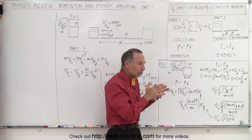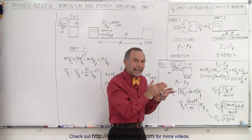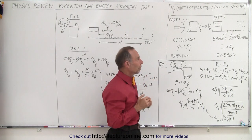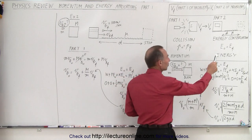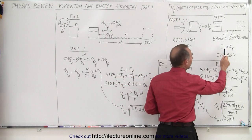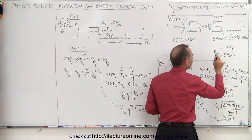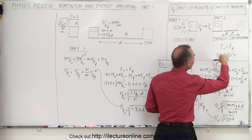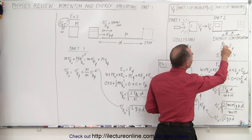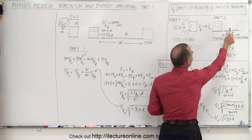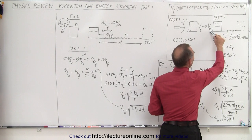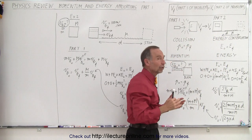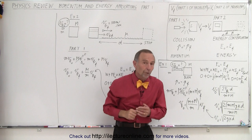So we know that we can track the energy equivalents across the second part of the problem. We use the energy conservation equation, where the initial energy equals the final energy, and therefore we can calculate the initial velocity of part two, which then becomes the final velocity of part one, which allows us to find what we're looking for.